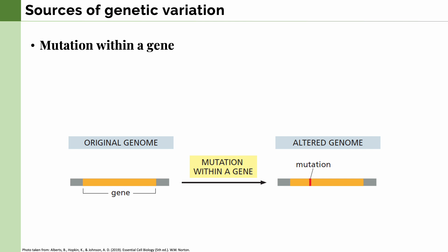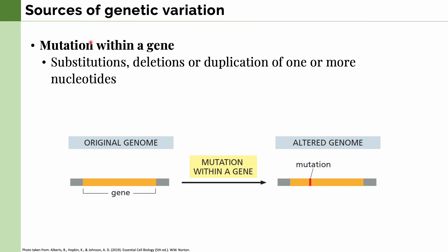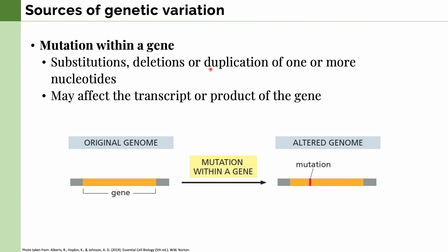Let's now move on to the different sources of genetic variation. The first and most common are mutations within a gene. These can be classified as substitutions, deletions, or duplications of one or more nucleotides. Substitutions mean that a nucleotide is exchanged with another type. A deletion is when a nucleotide is removed from the gene, and duplication means a specific nucleotide is copied within the gene. As a result, this can affect the transcript or the product of the gene, either an RNA or a protein.